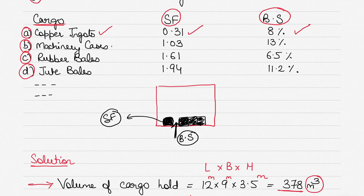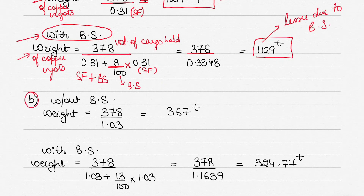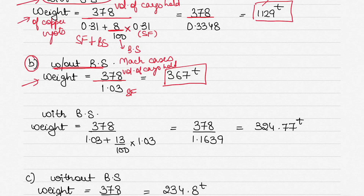The second cargo is machinery in cases, with a stowage factor of 1.03 and broken stowage of 13%. For loading without broken stowage, it's the same procedure: volume of cargo hold ÷ stowage factor of machinery cases = 378 ÷ 1.03, giving 367 tons.